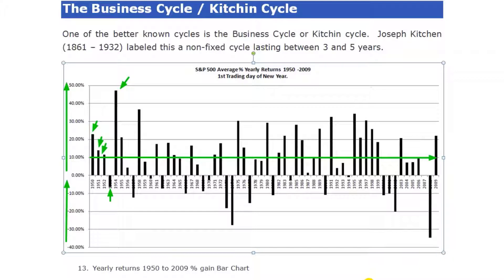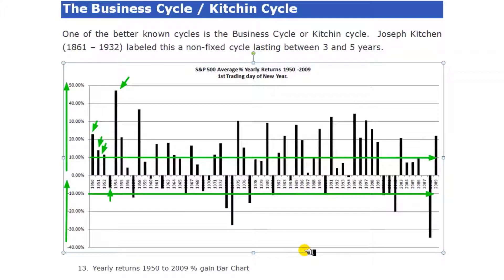The number of years registering lower than a 10% loss was 9 out of 60, or 15%, as you can see here. However, we did have 17 losing years during this period, around about 28.3% of the time.